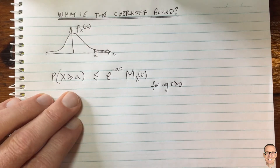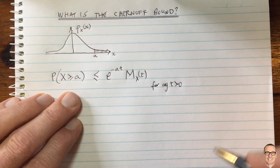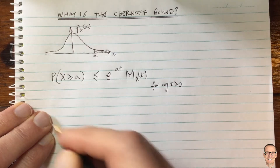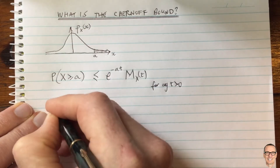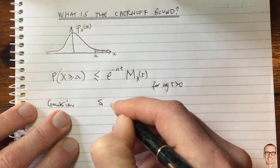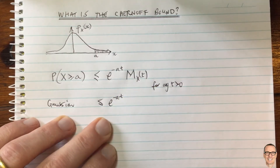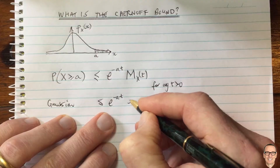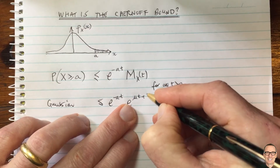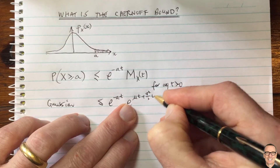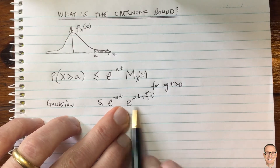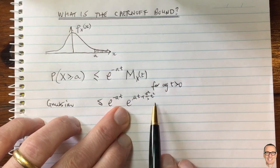Let's look at the Gaussian example. The moment generating function for a Gaussian is e to the mu*t plus one-half sigma squared times t squared. Putting this directly into the Chernoff bound, the probability is less than or equal to e to the minus at, times the moment generating function e to the mu*t plus half sigma squared t squared.